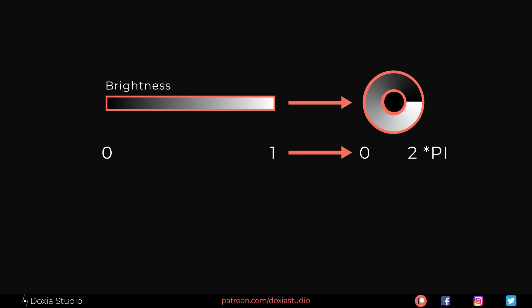After we get our angle from the brightness, we are going to use simple math to convert that angle to a vector. And that's how we are going to control our particles' velocity and direction. So, let's start our tutorial in Houdini.